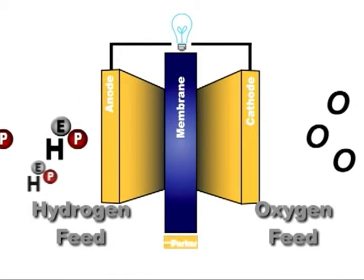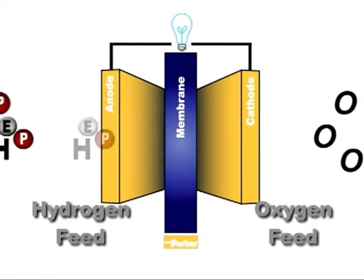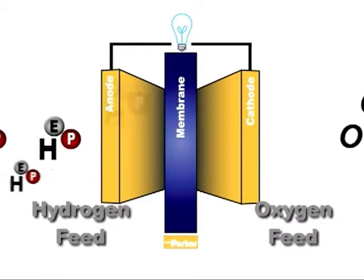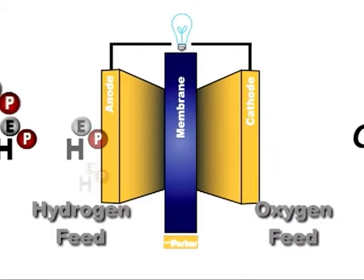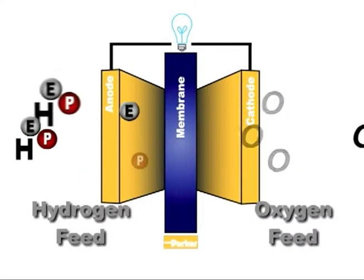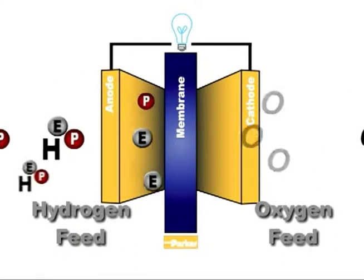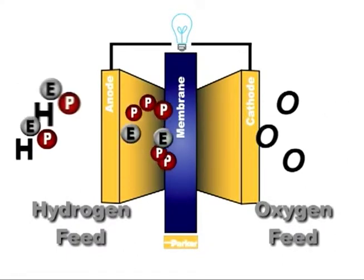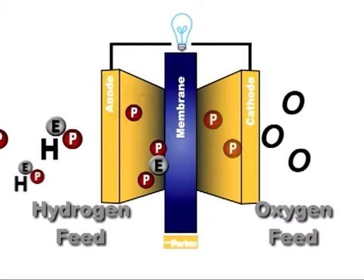of the membrane electrode assembly, or MEA. The GDL helps direct the molecules down to the catalyst layer of the MEA. This is where the H2 molecules are split into electrons and protons. The protons pass through the membrane and cross over to the oxygen side of the membrane.